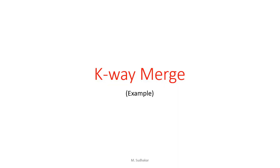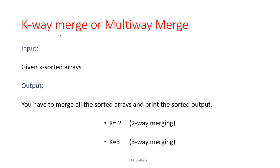Hello everyone. In this video I will explain the concept of k-way merge that is used in external sorting. This k-way merging is also called as multi-way merging. The input for this algorithm is k sorted arrays, each having n number of elements. In some cases the n value may be same or different. The output is to merge all the sorted arrays and print the sorted output. In this video I am taking k value 2 and 3.